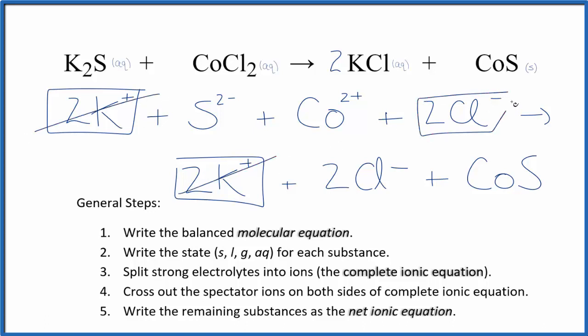I see two chloride ions there in the reactants, these spectator ions here. We'll cross them out. We have them again in the products. So we cross out the spectator ions. What's left is the net ionic equation for K2S plus CoCl2.